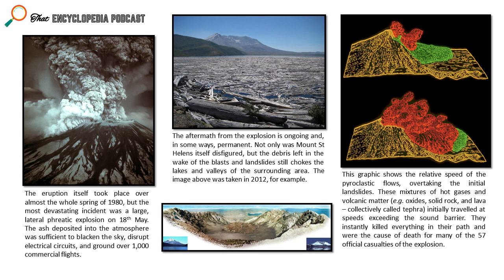Mount Saint Helens did change its shape significantly — it blew up part of the mountain but wasn't strong enough to completely level it, only everything around it. Mount Saint Helens still exists today, is still monitored, and is still an active volcano. It had another period of volcanic activity between 2004 and 2008, although it never resulted in an eruption anywhere near the scale of 1980. You can still go and visit Mount Saint Helens, though it looks quite different from photos taken prior to the 1980 eruption.